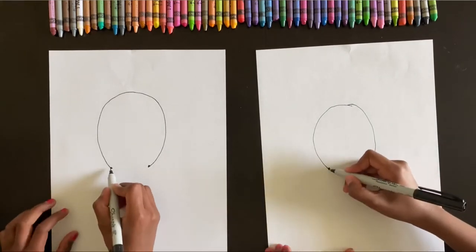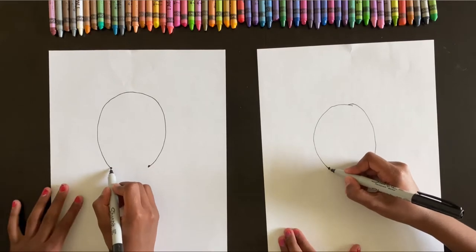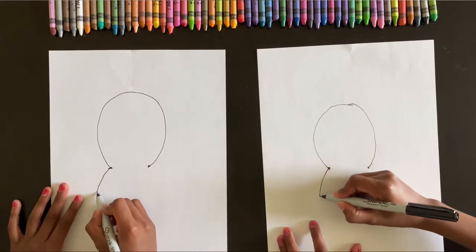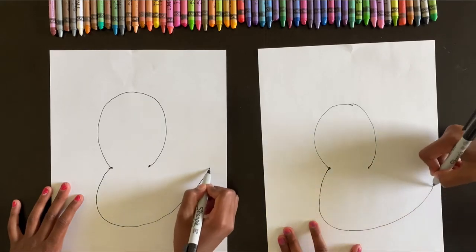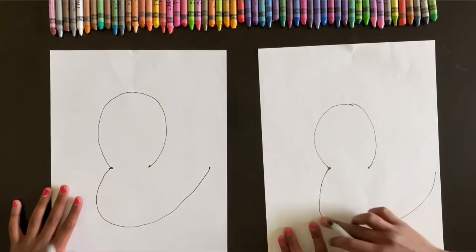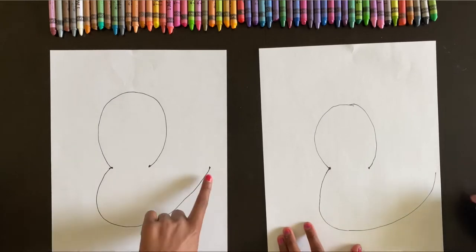And from the bottom of it, on the left side, you draw a line like this and point it up here for the bottom. And this is going to be the tail.